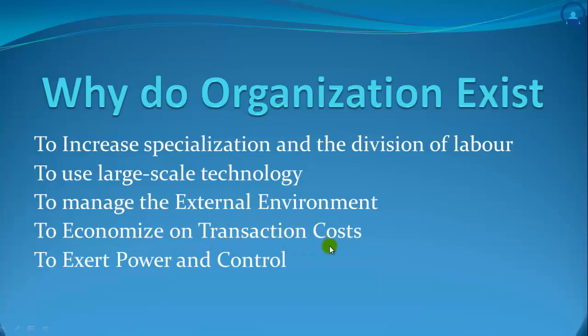The fourth reason is to economize on transaction costs. When people cooperate to produce goods and services, certain problems arise as they decide what to do and how to work with others effectively. People must jointly decide who will do which task, who will get paid what amount, and how to decide if each worker is doing their share. The costs associated with negotiating, monitoring, and governing exchanges between people are called transaction costs. Organizations' ability to control exchanges between people reduces these transaction costs.